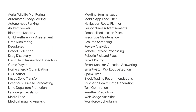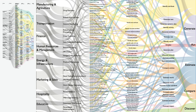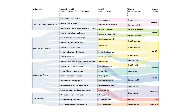We did this for 40 AI examples across 14 different domains, spanning consumer-facing and business-to-business applications. We worked through a large Sankey diagram to gradually abstract more than 200 unique capabilities, which led us to eight high-level capabilities: estimate, forecast, compare, detect, identify, discover, generate, and act.